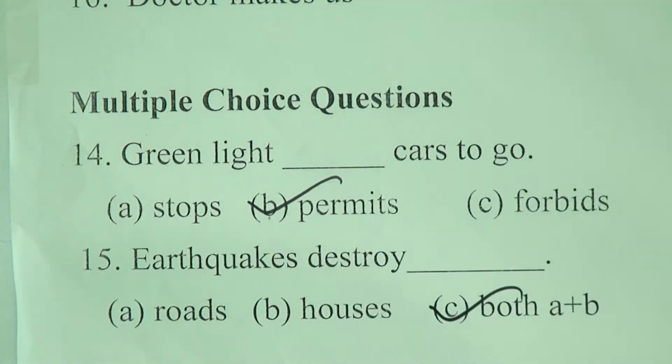Number six: How many persons have been awarded the title Bir Shreshtha? Answer: seven persons. Number seven: Who is the author of our national anthem 'Amar Sonar Bangla'? Answer: Rabindranath Tagore. Number eight: Who is the national poet of Bangladesh? Answer: Kazi Nazrul Islam.